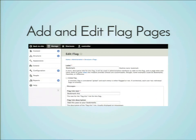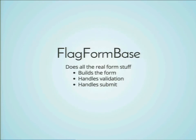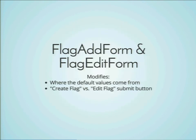Now that we have the list page, we need to do the add and edit flag pages. We have four form classes: FlagFormBase, FlagAddForm, FlagEditForm, and FlagDeleteForm. FlagAddForm and FlagEditForm both derive from FlagFormBase, which derives from a Drupal-provided class called EntityForm. FlagFormBase does all the real form work — it builds the form, handles validation, handles submit. The two subclasses handle the different details that make one form different from the other when adding versus editing the flag — basically determining where default values come from and changing the text of the submit button. This is a very common pattern for creating forms in Drupal 8.